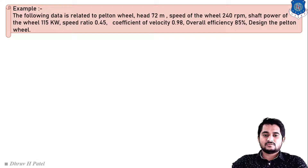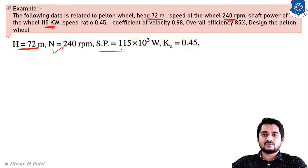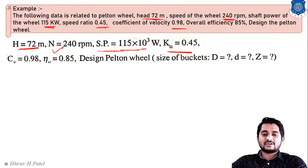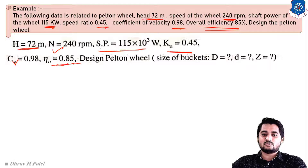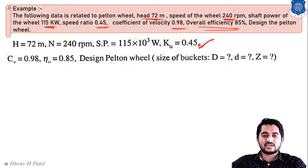Let us solve one example based on Pelton wheel turbine design. Given data: Head H equals 72 m, speed N equals 240 rpm, shaft power SP equals 115 kW (115 × 10³ W), speed ratio Ku equals 0.45, coefficient of velocity Cv equals 0.98, and overall efficiency eta_0 equals 0.85. We need to design the Pelton wheel. Start by identifying which known equations apply to the given data — Ku, Cv, and eta_0 equations are all known.